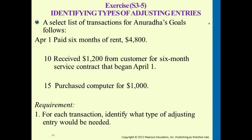Let's work on a few examples so you have a better idea how this actually works. For these transactions, I just want you to identify among the five categories of adjusting entries which ones these fall under.